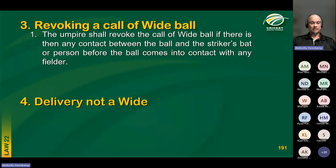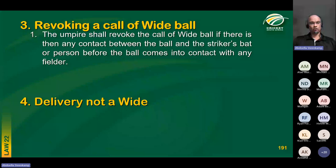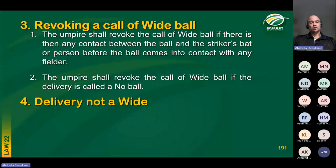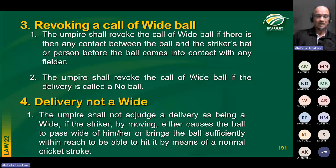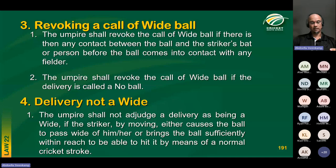After the first call and signal of wide — which informs the players, the batters, and your colleague — once the ball is dead, you then turn to the scorers, signal again, and wait for them to acknowledge your signal. Also, the law tells us the delivery will not be wide if the striker, by moving, either causes the ball to pass wide of the striker, or by moving brings the ball sufficiently within reach to be able to hit it by means of a normal cricket shot.